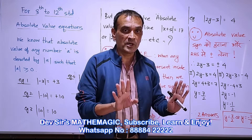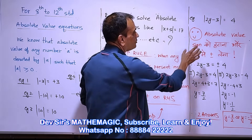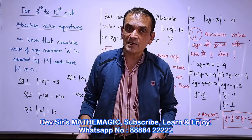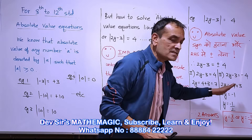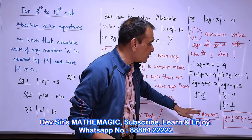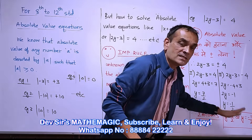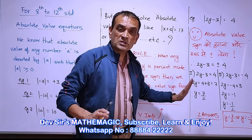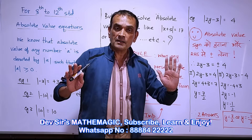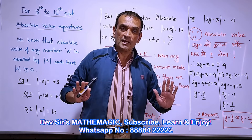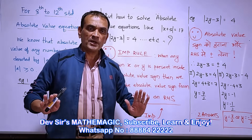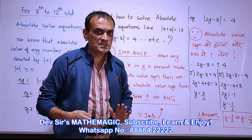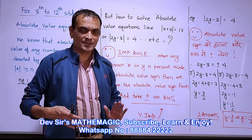The rule for absolute value equations: remove the absolute value sign, put plus or minus on the right-hand side. After taking plus or minus you will get two cases and two answers. It's a very short video for today — make sure everyone understands and remembers this. I'll come back with more important tips. Bye!